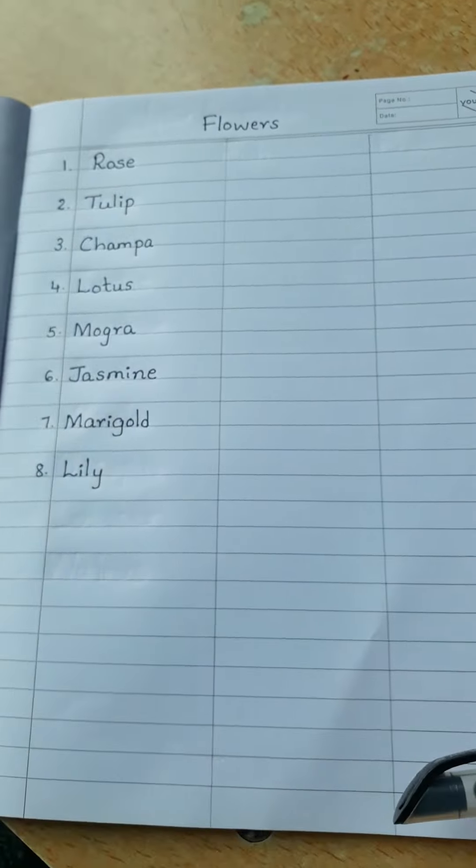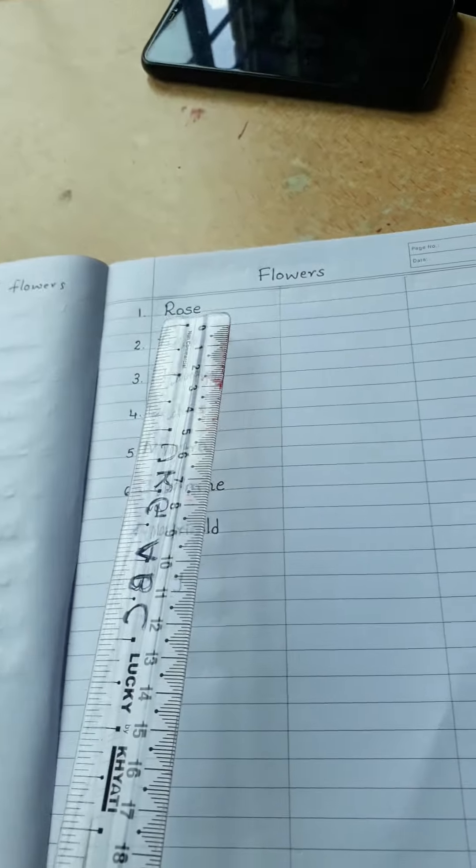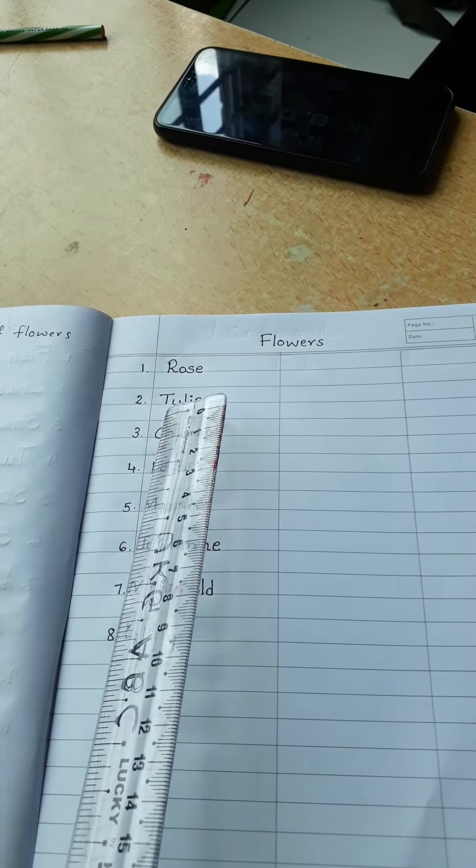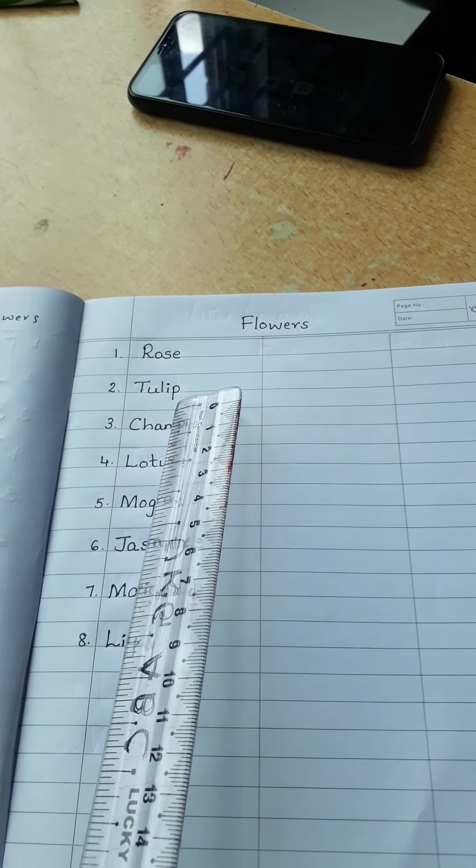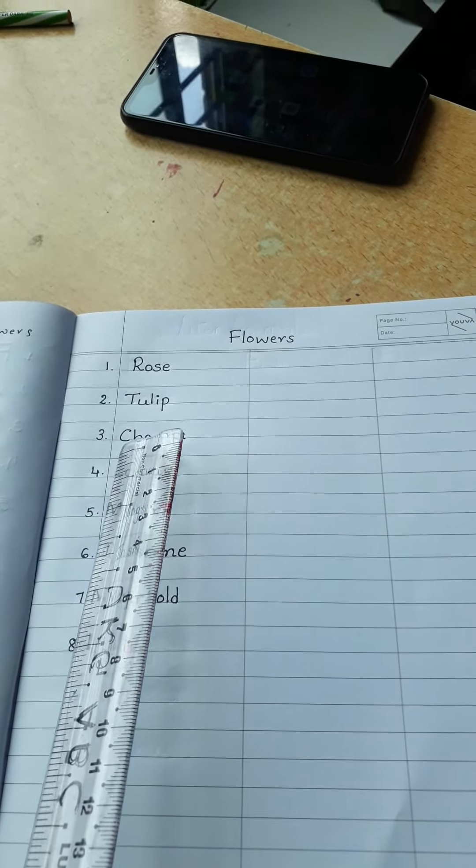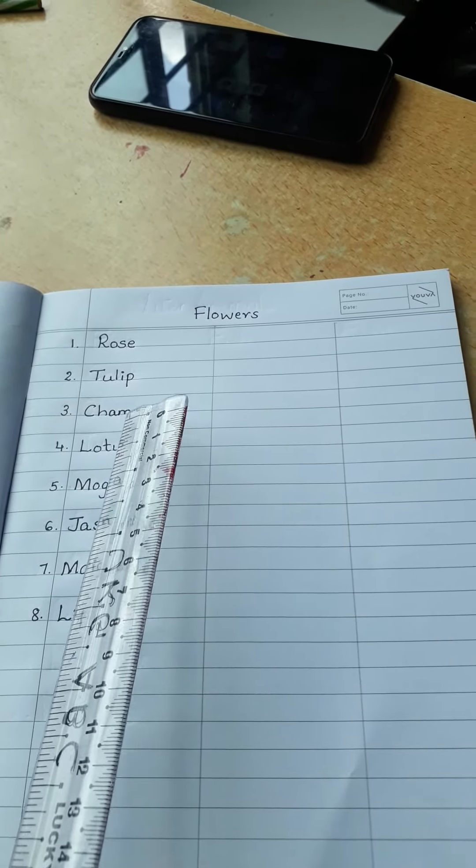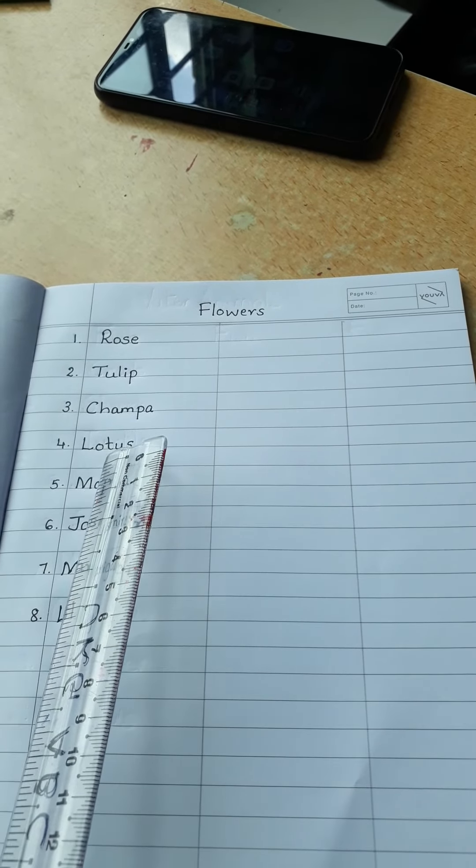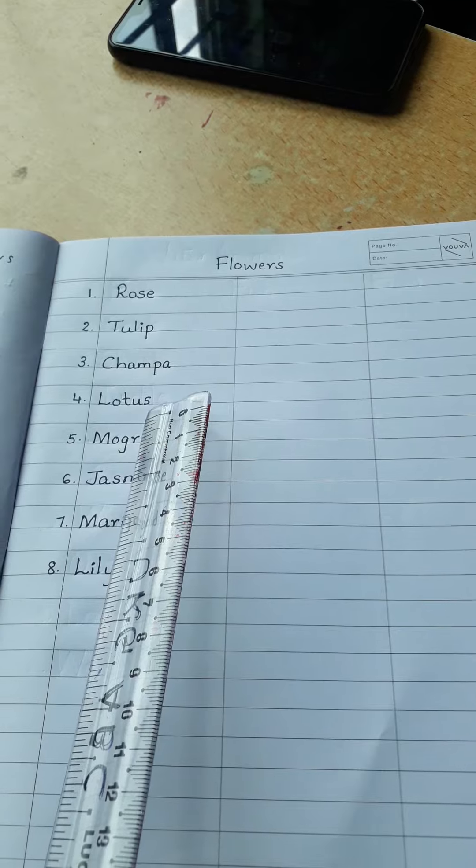Okay children, once again I will read for you. R-O-S-E, rose. T-U-L-I-P, tulip. C-H-A-M-P-A, champa. L-O-T-U-S, lotus.